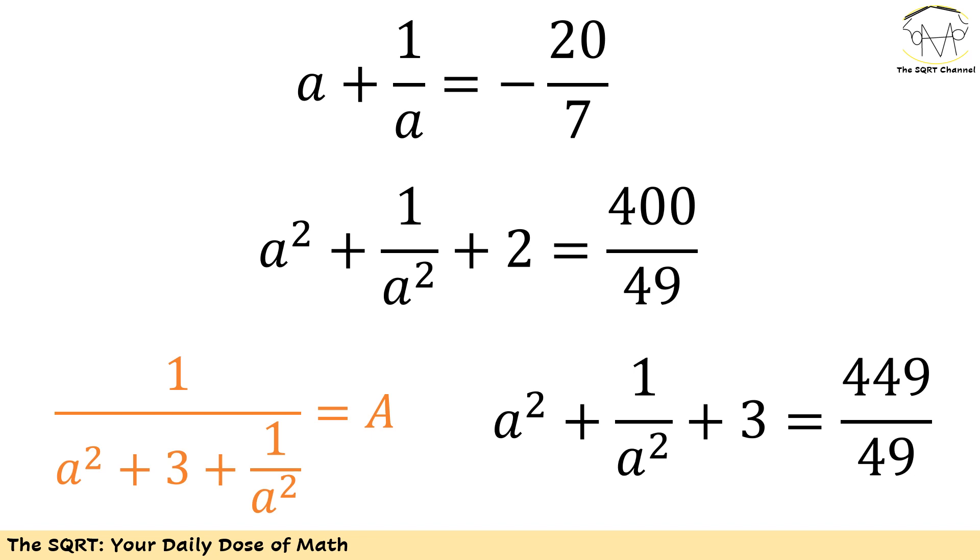And remember what we wanted to find was 1 over a squared plus 1 over a squared plus 3. We already have plus 2 here so we add another one here and then we will see a squared plus 1 over a squared plus 3 is 449 over 49.